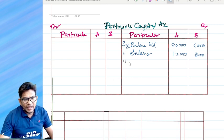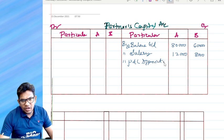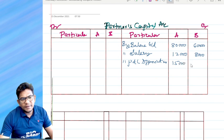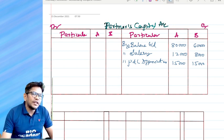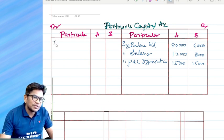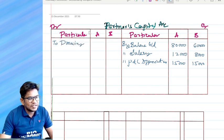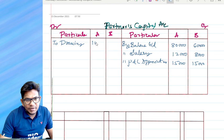Next, profit and loss appropriation account. Take it 15,000 and 15,000 because partners are equal here. Three items are over. We need to take another two items, two imaginary figures. Now I will take drawings on the debit side, because always drawings we mention on the debit side of the partners capital account. Take it 10,000 and 8,000.